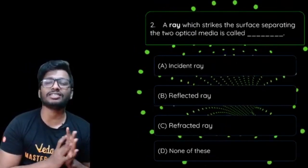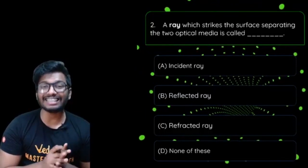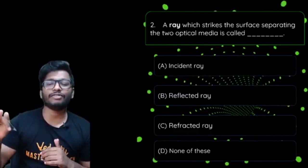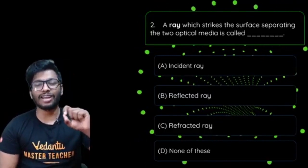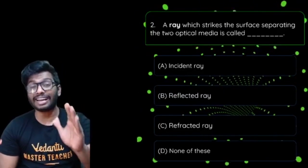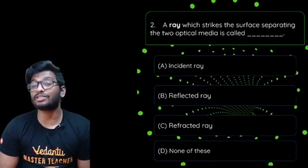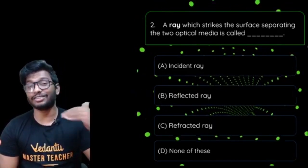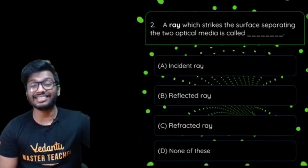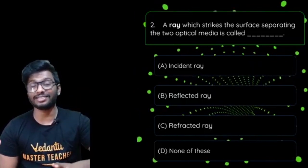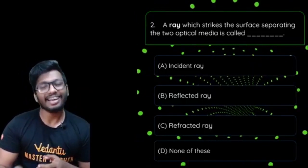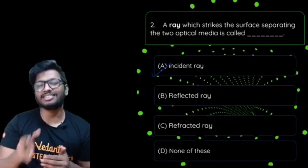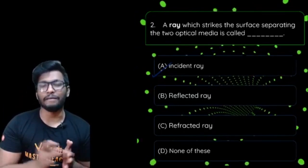Question 2: A ray which strikes the surface separating two optical media is called — (a) incident ray, (b) reflected ray, (c) refracted ray, or (d) none of these? The answer is straightforward — it is the incident ray, option A. That is exactly what this entire topic is based on.